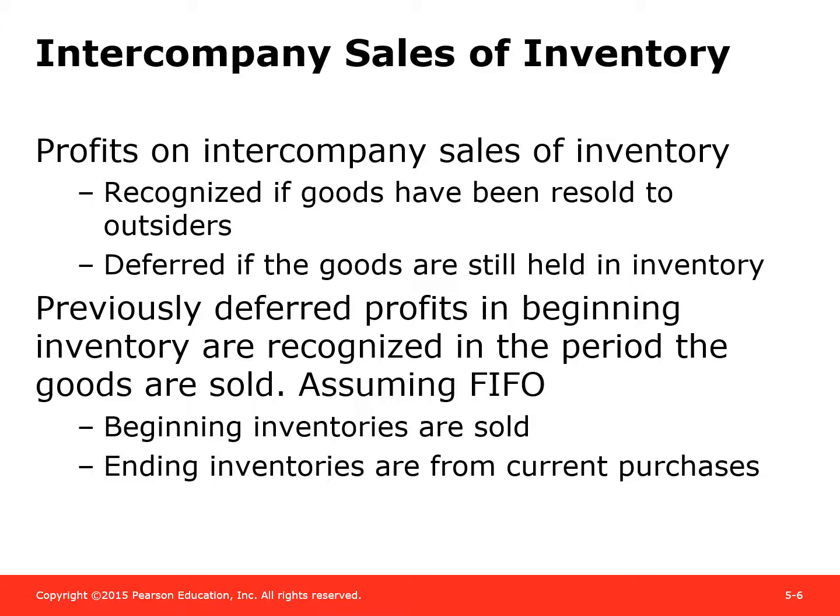There are some rules we need to observe for intercompany sales of inventory in accordance with GAAP. When we have a sale from parent to subsidiary or subsidiary to parent, we are not going to recognize the gain on that sale until either entity sells the inventory to a third party — an outsider. This limits manipulation of financial statements. GAAP and the FASB have decided to recognize the gain only when sales are to outsiders.